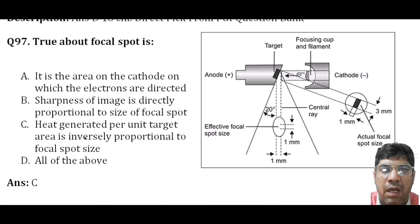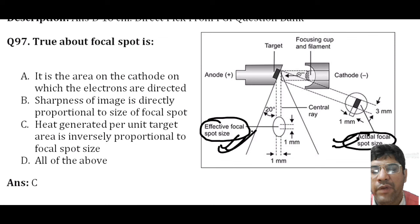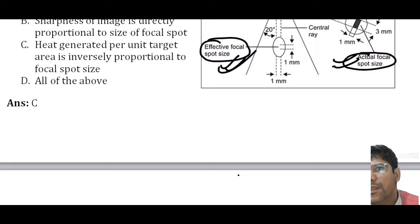Regarding the focal spot: the heat generated per unit target length is inversely proportional to the focal spot. The effective focal spot and the actual focal spot are distinct regions. More detailed information about the focal spot is covered in subject-wise lecture materials.